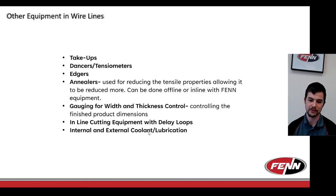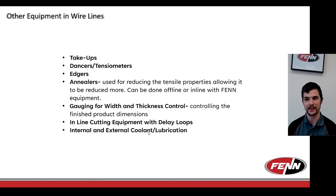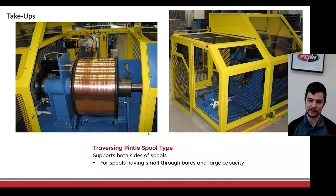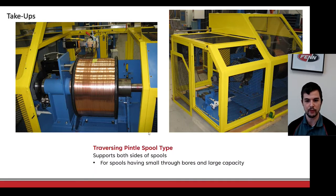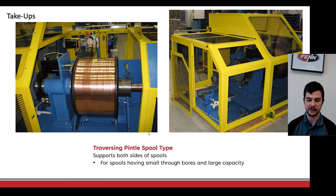At speeds up to 3,000 feet per minute, heat generated in the wire and rolls can be extremely high, so internal and external coolant and lubrication is very common on wire lines. Our take-ups and payoffs share a similar framework — the primary difference is that take-ups have a traverse mechanism for collecting wire, while payoffs don't. For smaller wire coils and weights, payoffs may just use a brake rather than a motor.